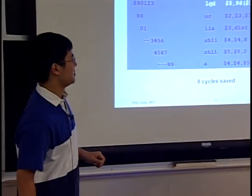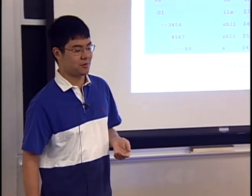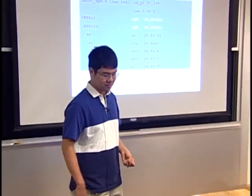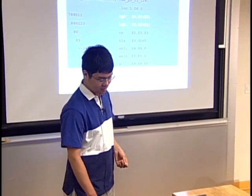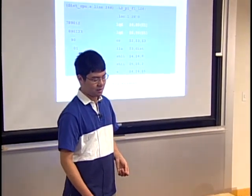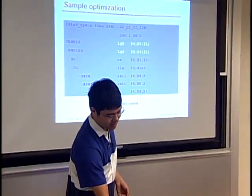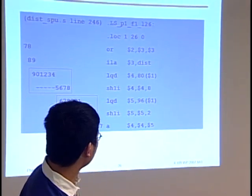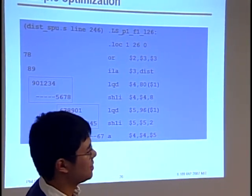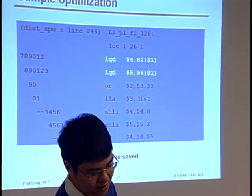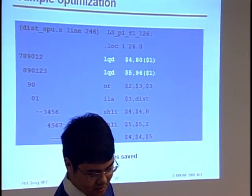If we run the timing utility again after the reordering, we saved eight cycles. On the previous picture we were going up to seven in that column, and now we're only going up to the previous nine.